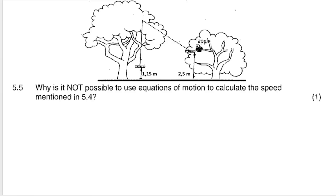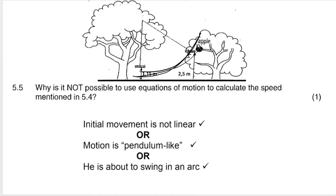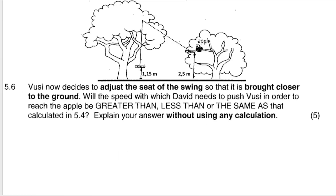Question 5.5 asks why it is not possible to use equations of motion to calculate the speed from 5.4. The motion of the swing is curved — it is not linear. Equations of motion can only be used for linear motion, either horizontal along the x-axis or vertical along the y-axis. Because the swing moves in a curved path, equations of motion do not apply.